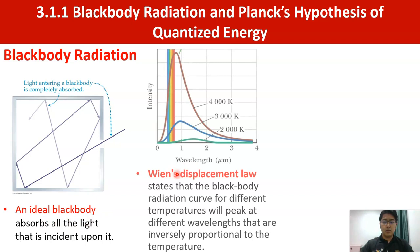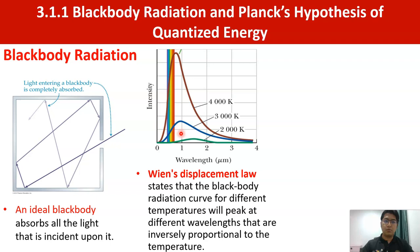Wien's displacement law states that the black body radiation curve for different temperatures will peak at different wavelengths that are inversely proportional to the temperature. Looking at the graph of intensity versus wavelength, for different temperatures the intensity reaches different peaks at different wavelengths. For 2000 K the peak is between 1 to 2 micrometers, and for 3000 K the peak is nearer to 1 micrometer.